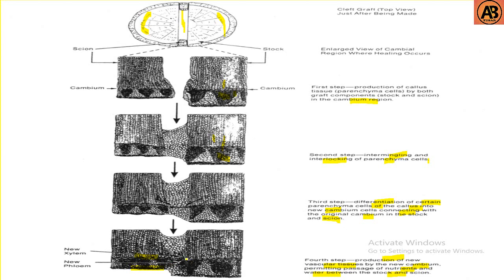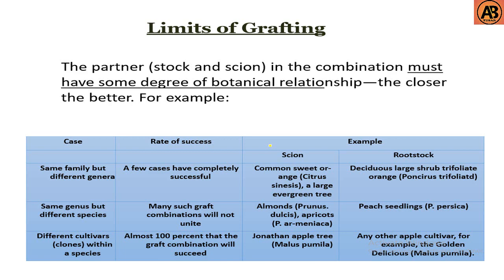There are some limitations of grafting. Same family but different genera — only a few cases have been completely successful. Same genus but different species — many such graft combinations will not unite. Different cultivars within the same species — almost 100 percent of graft combinations will succeed.